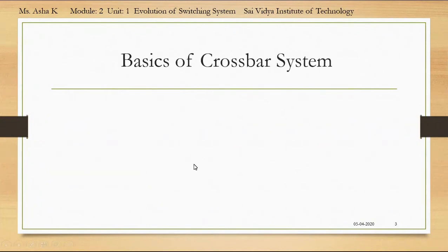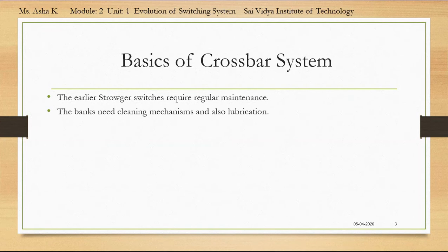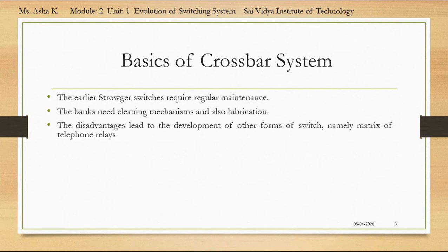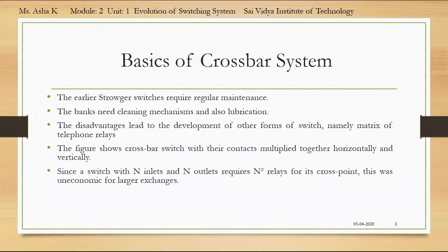In this session, the topic of discussion is basics of crossbar system. The earlier storage switches required regular maintenance — the banks needed cleaning mechanisms and also lubrication. These disadvantages led to the development of other forms of switches, namely a matrix of telephone relays. The figure shows the crossbar switch with contacts multiplied together horizontally and vertically. Since a switch with n inlets and n outlets requires n² relays for its cross points, this was uneconomic for larger exchanges.